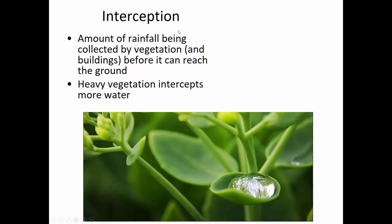Interception is related to abstraction. It's where vegetation or buildings prevent rainfall from even getting to the ground in the first place — interception precedes abstraction. Different types of plants intercept different quantities of water. You can see in this image a leaf holding on to a raindrop, and depending on how tall the plant is and how much leaf area it has, the ground underneath may receive considerably less rainfall than is actually falling from above.